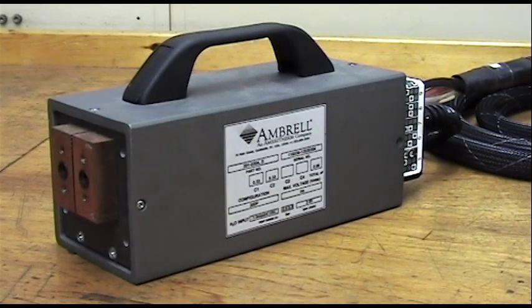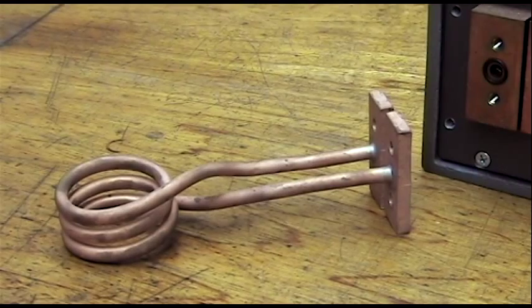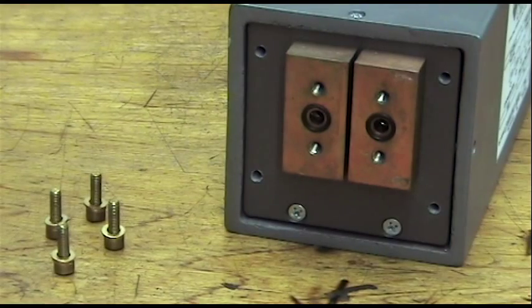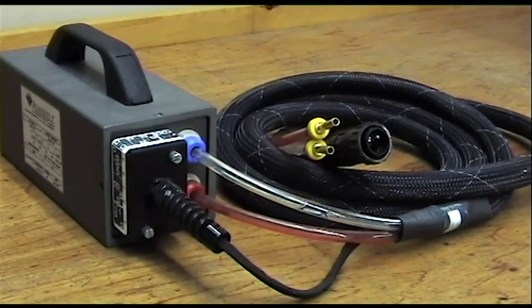The workhead matches the power of the inverter to the precision required by your process. The heating coil connects to this end of the workhead and the inverter feeds power into the other end via a flexible cable.